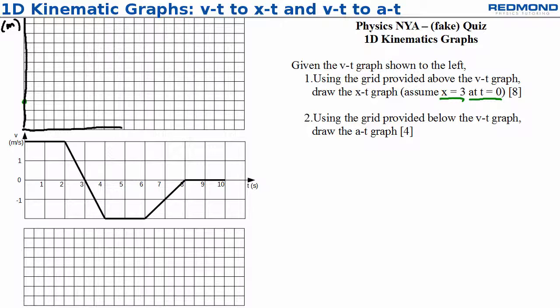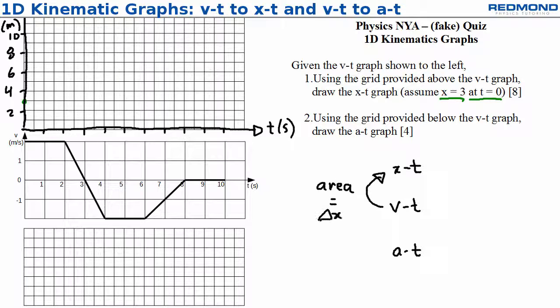Next, we need to find the area under the Vt curve to get the displacement, delta X, for the Xt graph. Remember, to go from Vt to Xt or from At to Vt, we need to find the area. When you're starting, just do one second at a time.